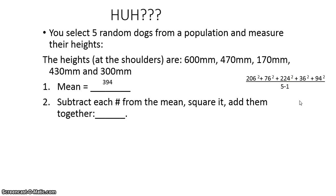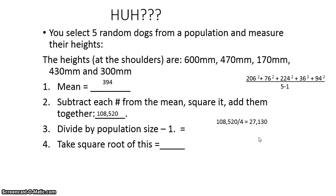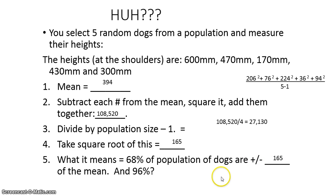The third step is to divide by the population size minus 1. There were five dogs in our sample, so we subtract 1 and divide by 4. That gives us 27,130, and then we take the square root of the entire thing. The number we get is 165. That tells us that if we take our mean, which was 394, then 68% of our population is between 394 plus 165 and 394 minus 165. And 96% of the population would lie between 394 plus double this and 394 minus double this.